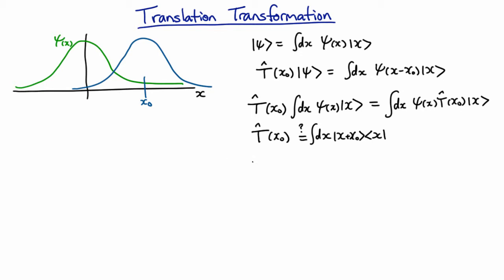So let's try applying it. So t of x0 acting on x is going to be equal to this. Now when I expand this out, remember this x is a dummy variable, so I'm going to have to choose a different variable. So I'll use y this time. y plus x0, y. Act that on x.